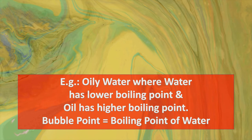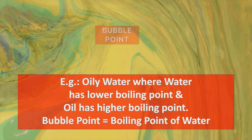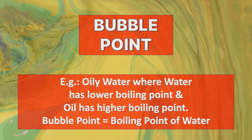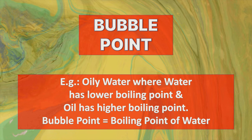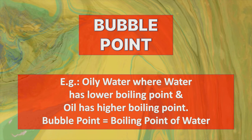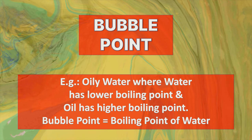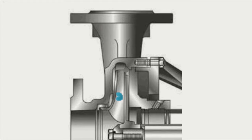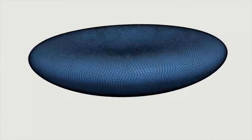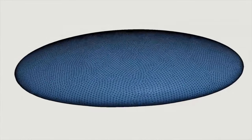Just a note on liquid mixtures — they generally have multiple liquid components with very different boiling points. In this case, the vapor bubble happens at a point called the bubble point, which is the boiling point of one of the components in the mixture.